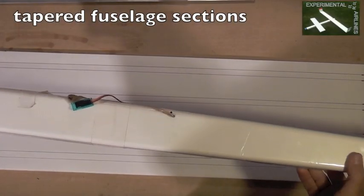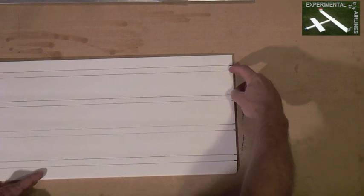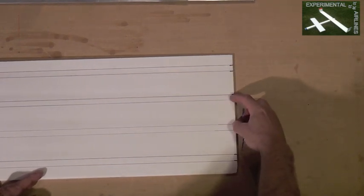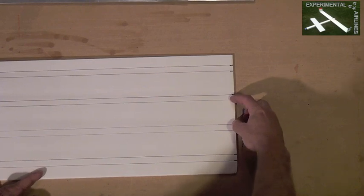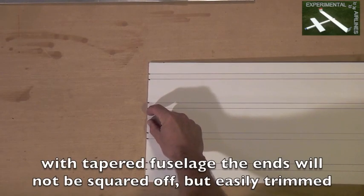Now what if you want to taper the fuselage like this motor glider towards the tail? It's pretty easy. Just reduce the intervals at the other end of your foam board down to the desired interval. For example, this is two inches at this end. Maybe we want to make this one inch here.